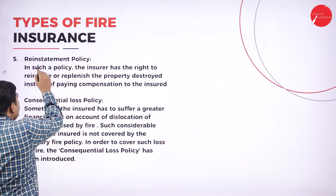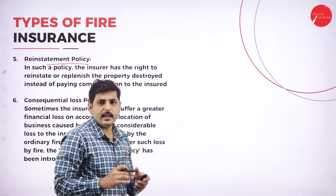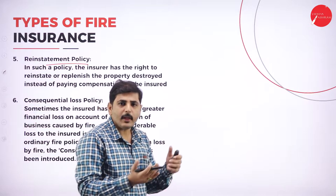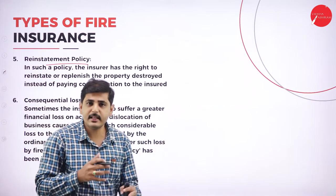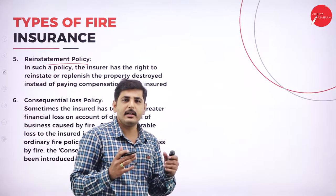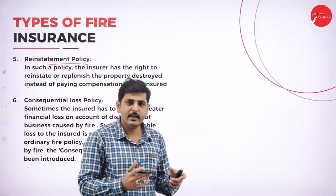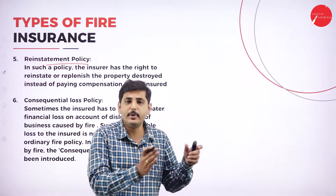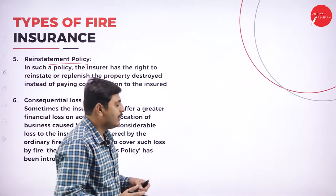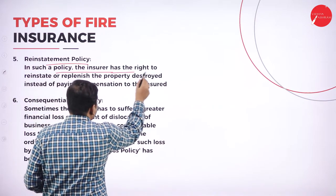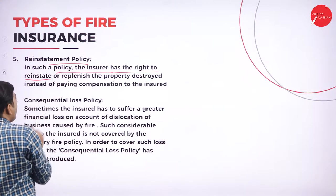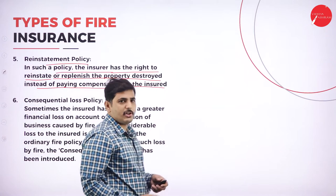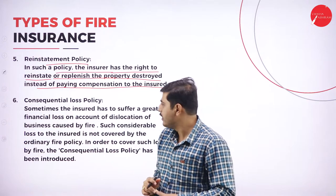Reinstatement policy — this means replacing the goods. If any goods are destroyed, the company instead of paying money will replace the product or goods. For example, if a house is damaged by fire, the insurance company rebuilds a new house — it means replacing the goods. Under this policy, the insurer has the right to reinstate or replenish the property destroyed instead of paying compensation to the insured.